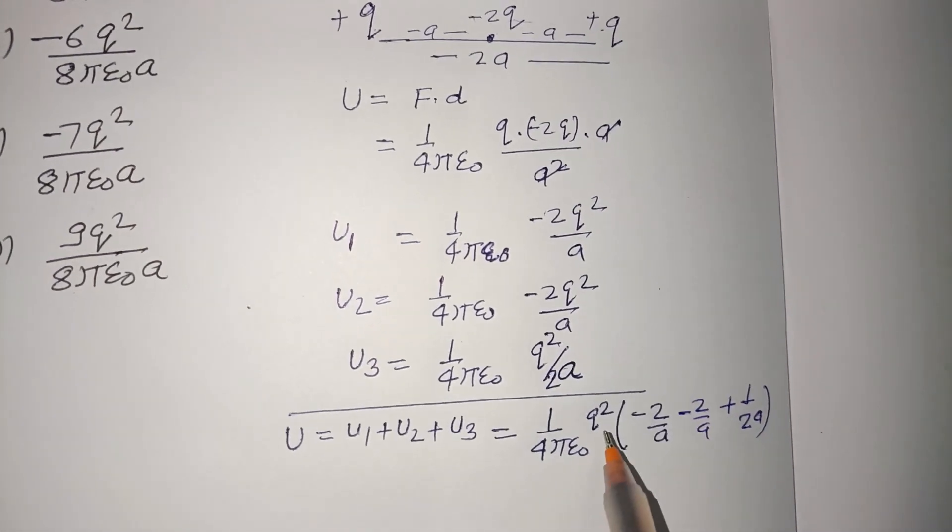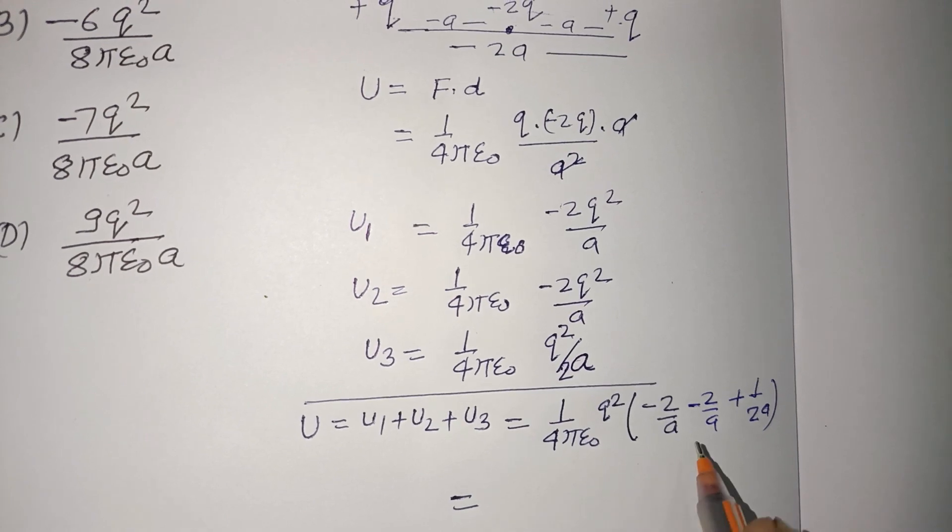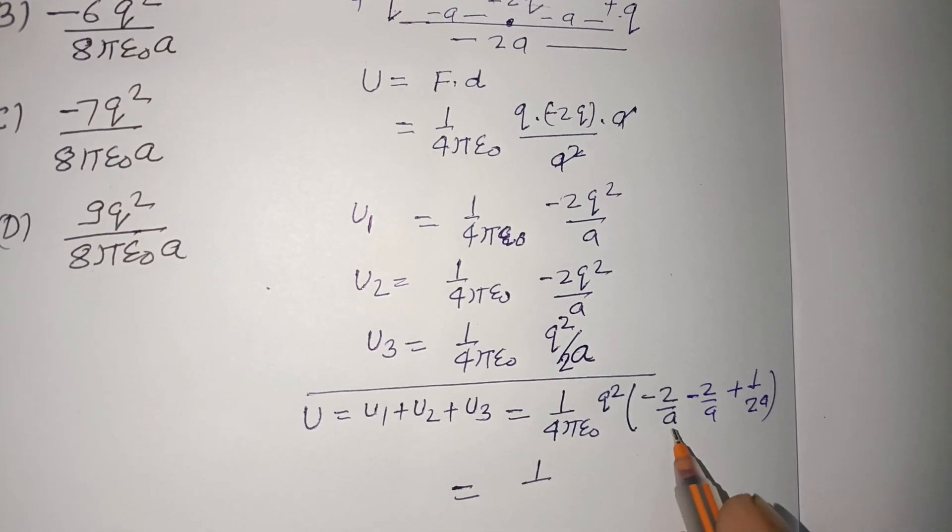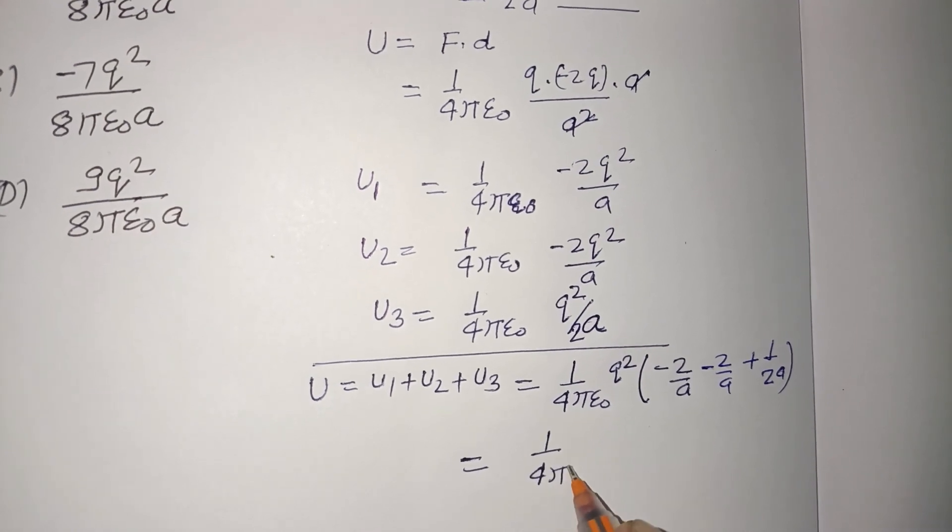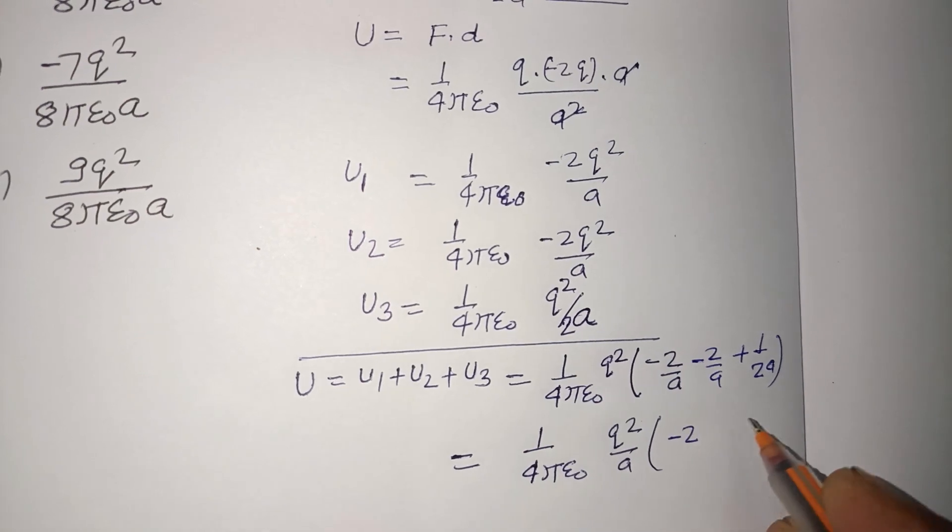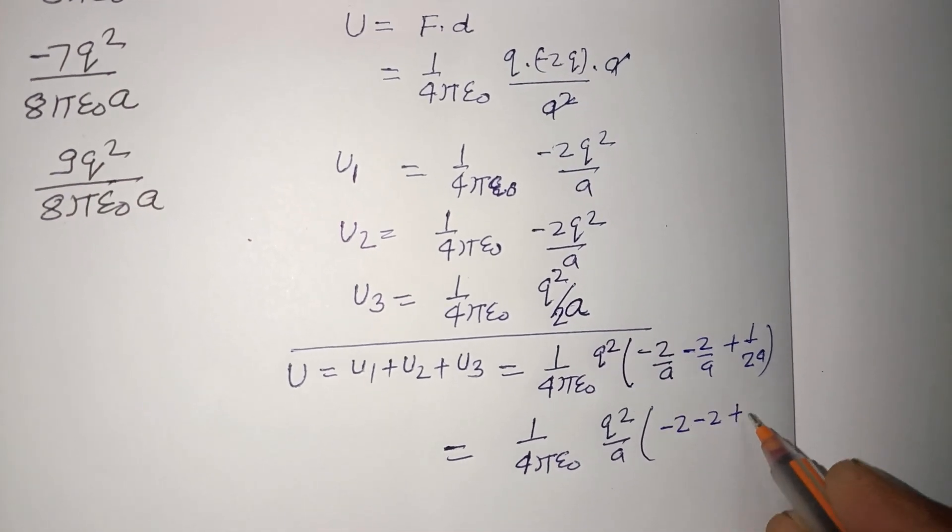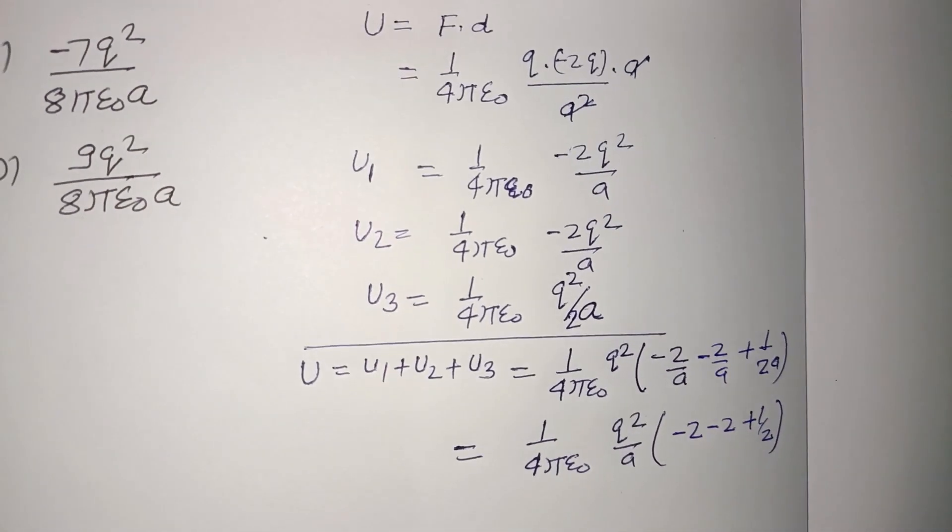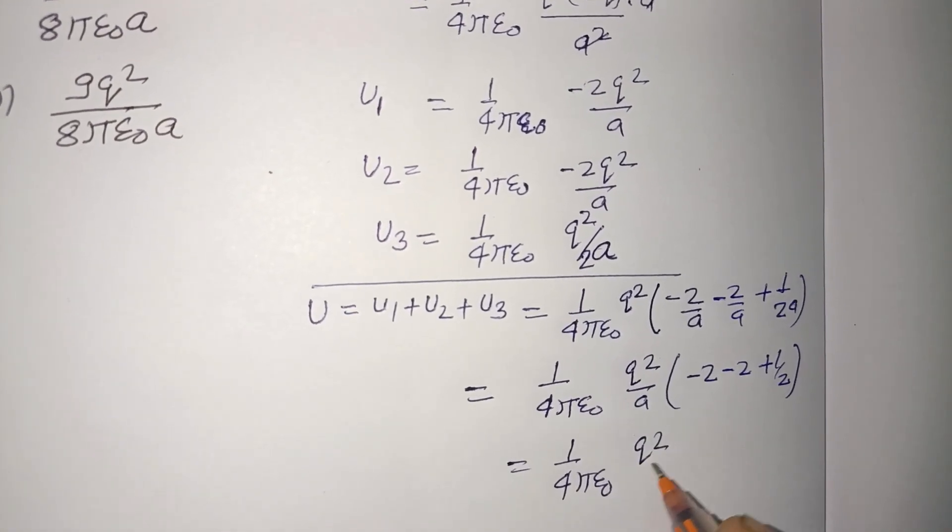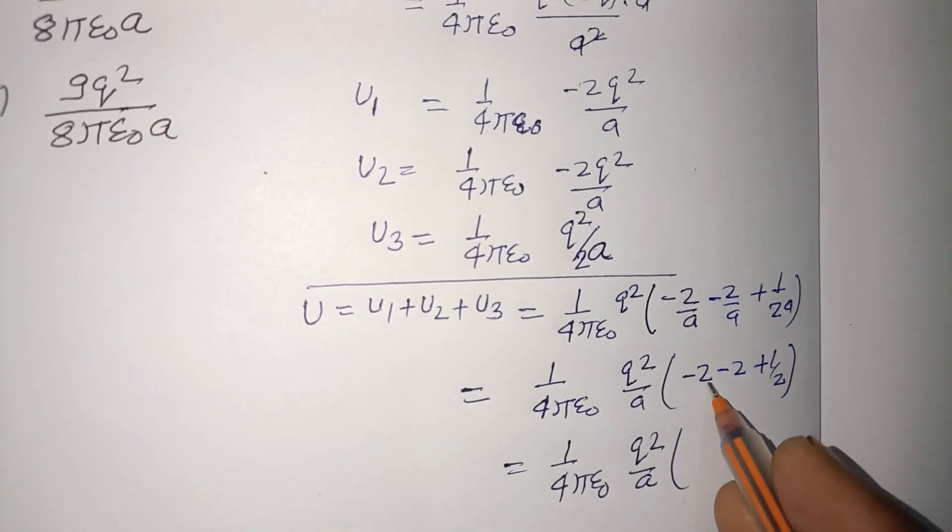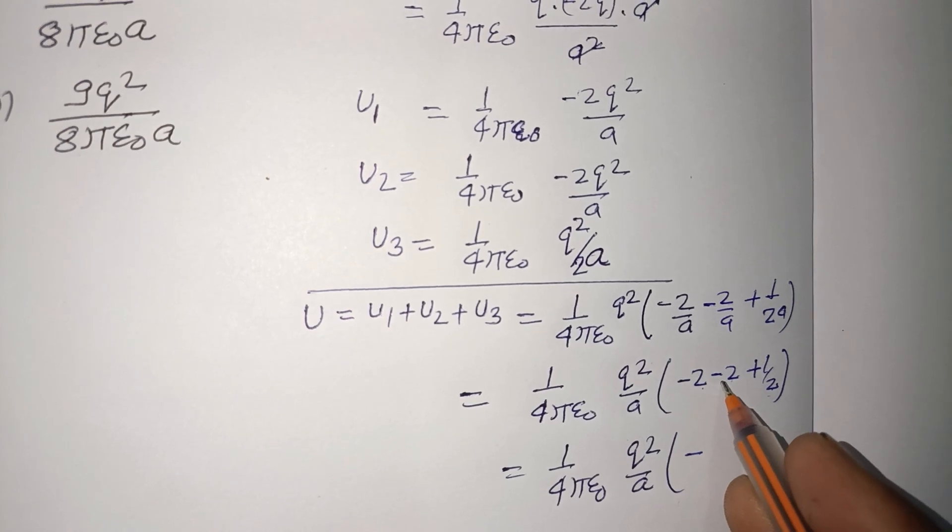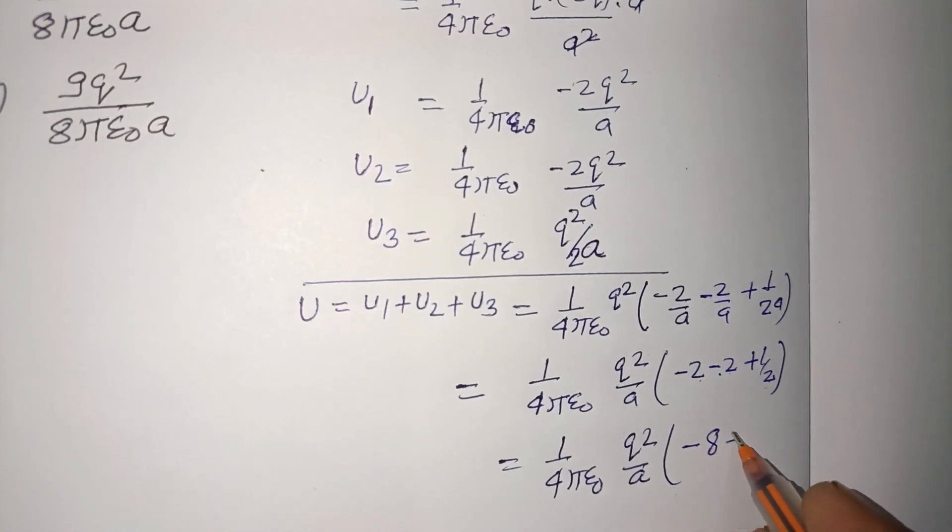So A is also common here. 1 upon 4πε₀ Q² over A times (-2 - 2 + 1/2). That's 1 upon 4πε₀ Q² over A, -2 -2 is -4, -2 into the denominator gives -8 plus 1.